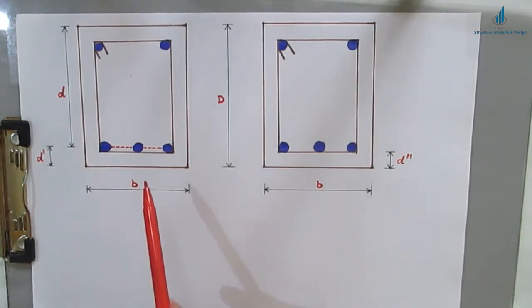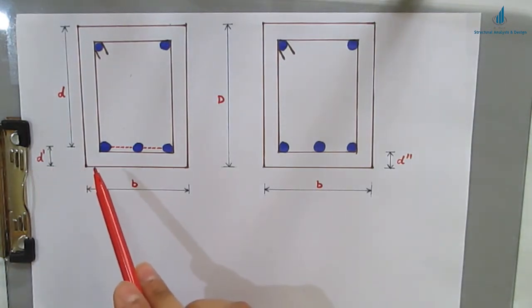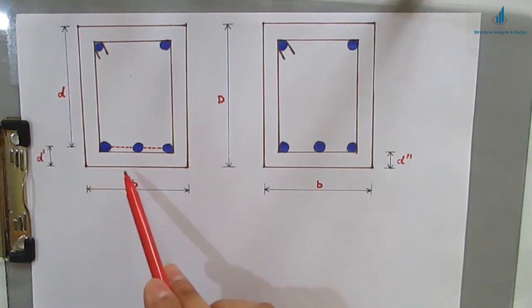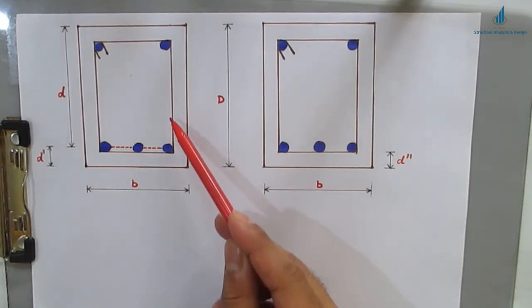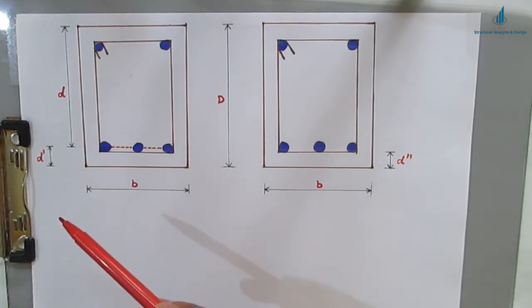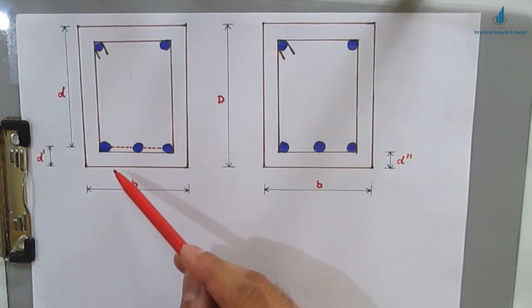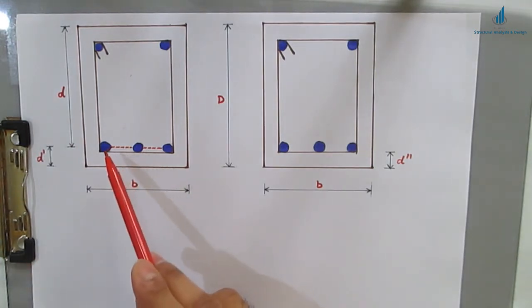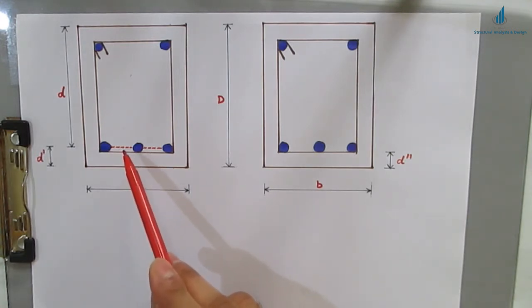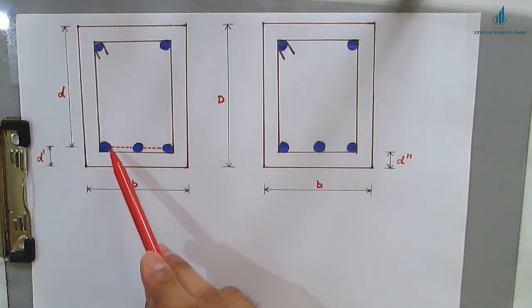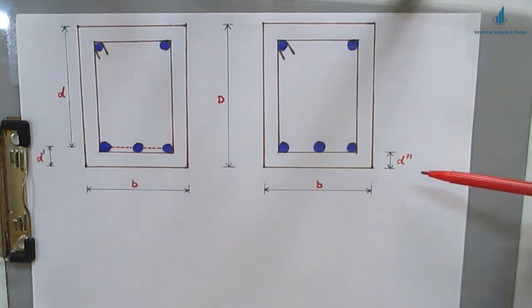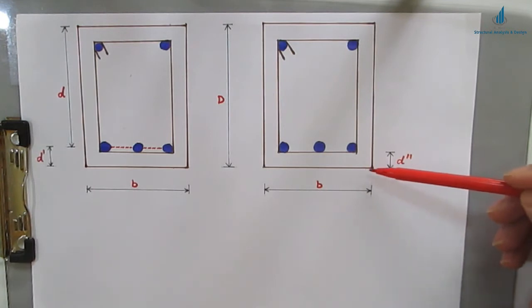So what is the difference between d dash and d double dash? Effective cover, that is d dash, is the distance measured from the face of the member to the center of reinforcement. This is the face of the member, covered with concrete. What you are seeing here is stirrups, which are made from steel. The dotted lines shown in red indicate the center of reinforcement. So effective cover is measured from the face of the member to the center of reinforcement.